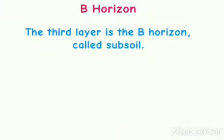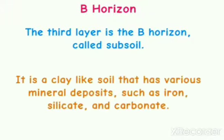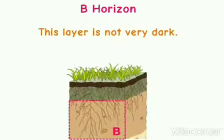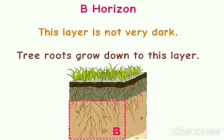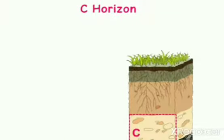The third layer is the B horizon, called subsoil. It is a clay-like soil that has various mineral deposits such as iron, silicates, and carbonates. This layer is not very dark. Tree roots grow down into this layer.